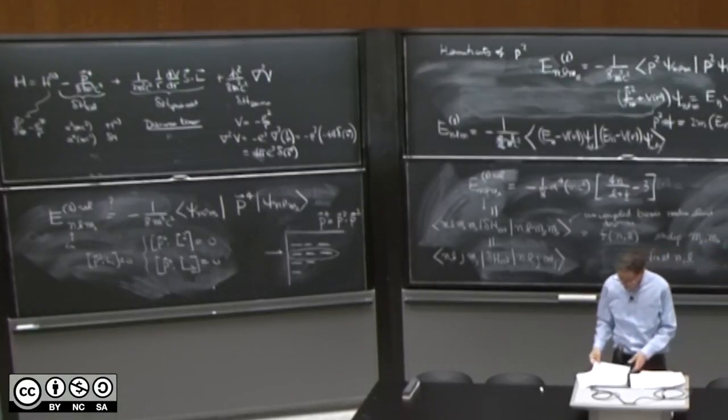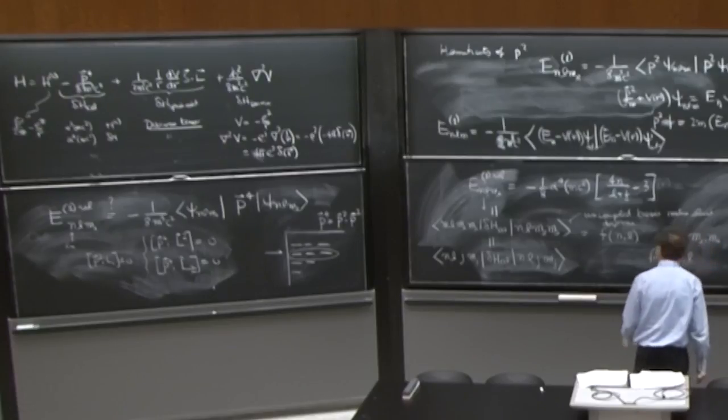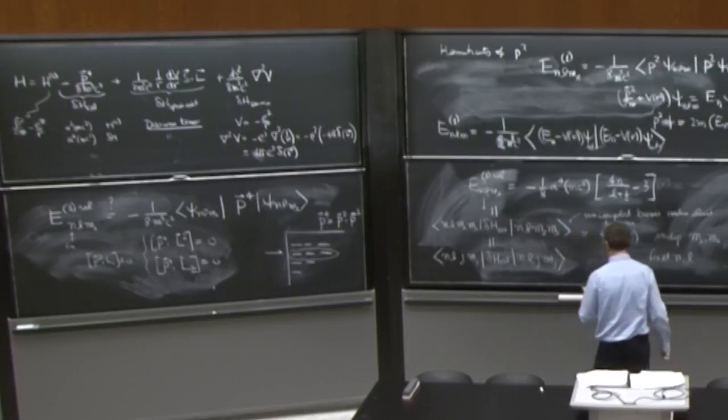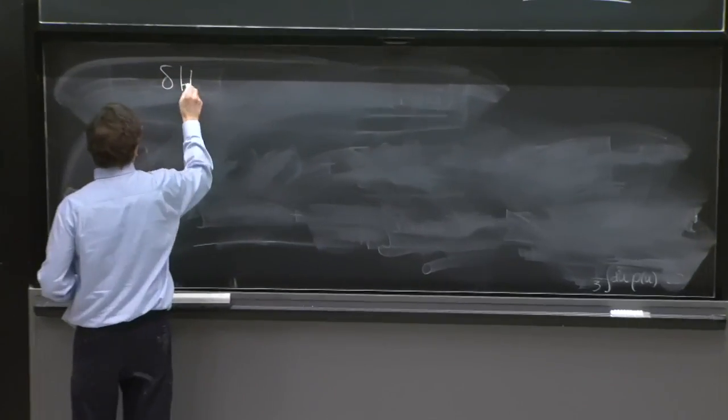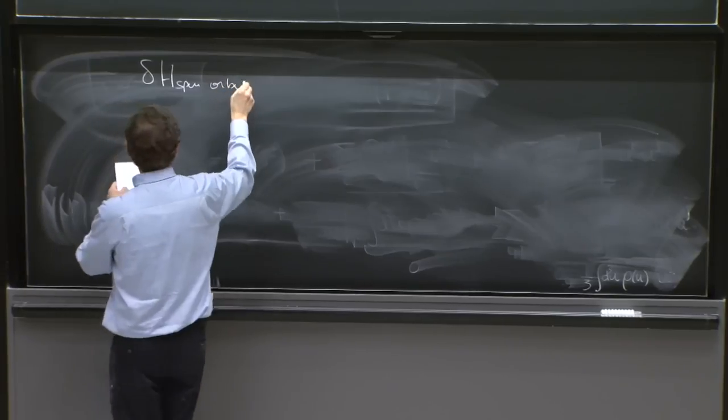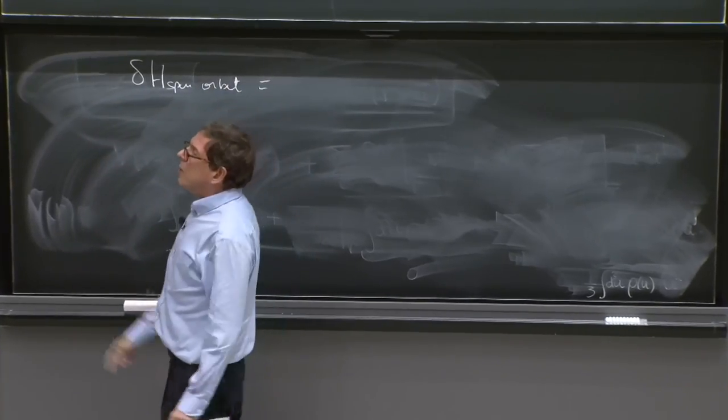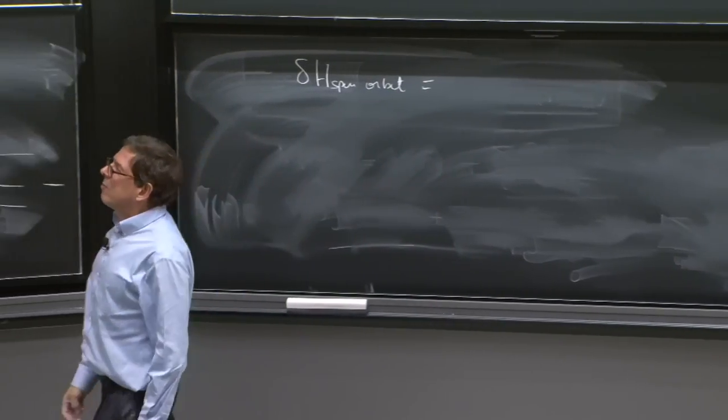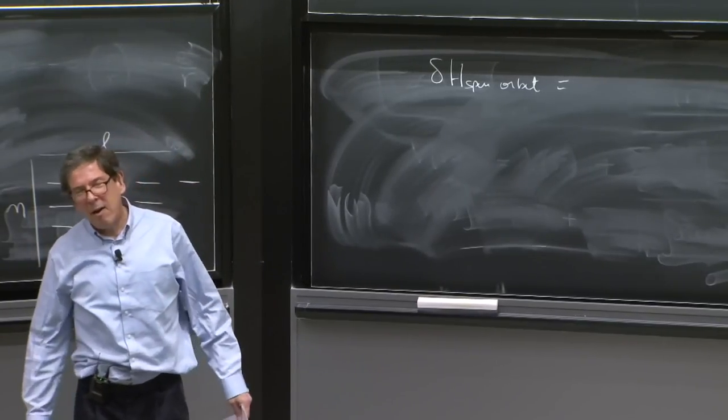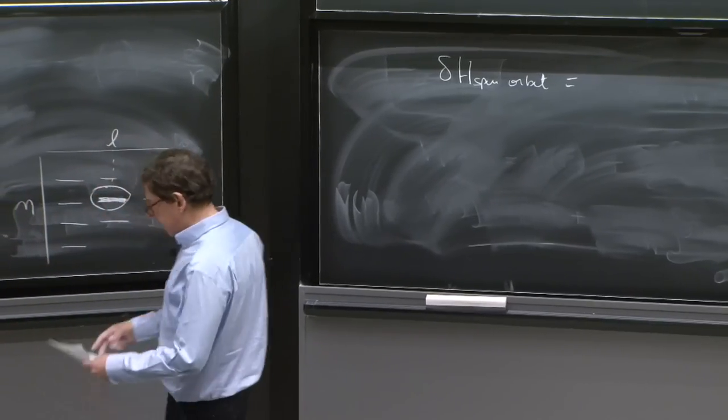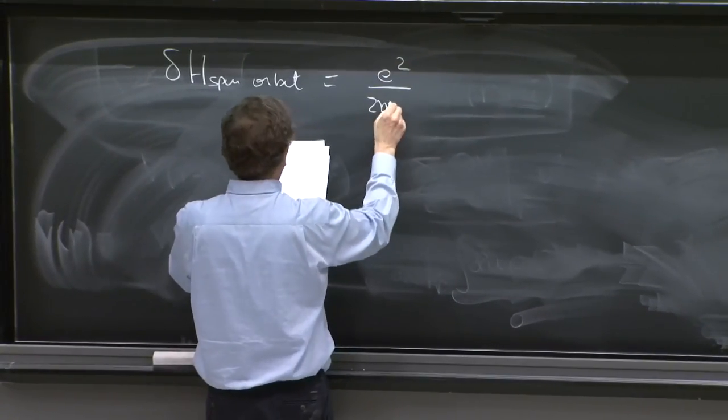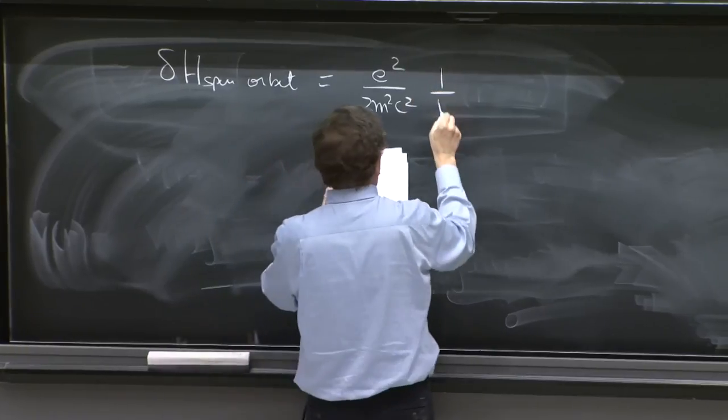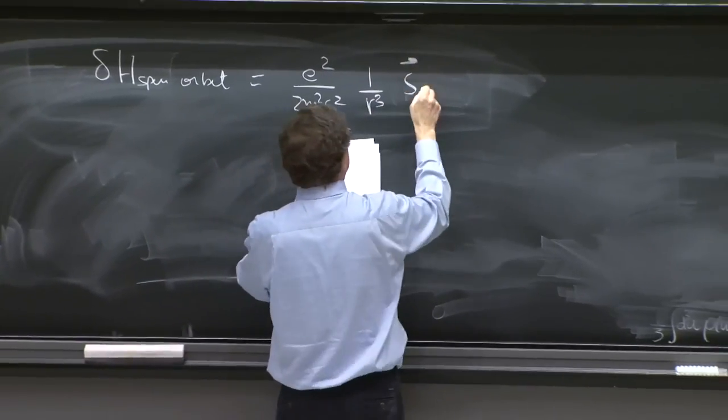All right. Spin orbit. We have it still there. Delta H spin orbit. Well, we know what V is. So that derivative dV/dr can be taken care of, the 1 over r. That gives you e squared over 2m squared c squared 1 over r cubed sl.